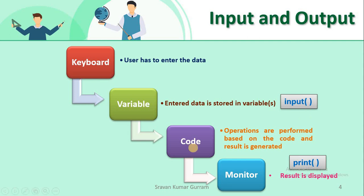After storing the data into variables, according to our logic the program will be executed, and finally the result will be generated. If you want to print that generated result on the screen, we need to use the output function. In Python, the output function is print. In this video, we are going to cover the output function — that is print.